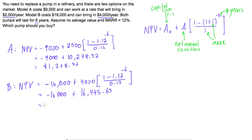Adding the two terms for project B, we get a net present value of $445.63. Both net present values are greater than zero, so both pumps bring in more than the minimum acceptable rate of return of 12%. However, the higher NPV wins — pump A has a higher NPV of $1,278.52 versus $445.63 — so you want to buy pump A.